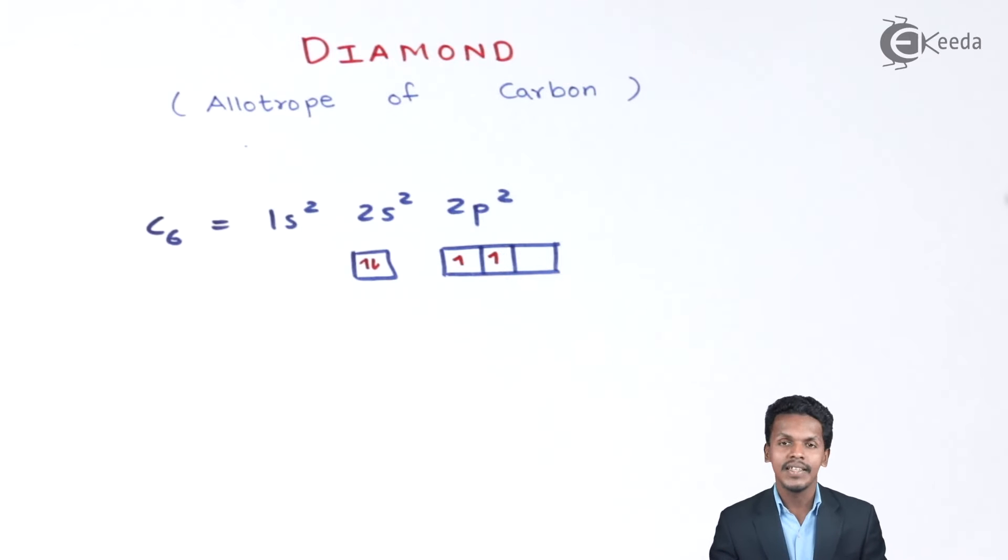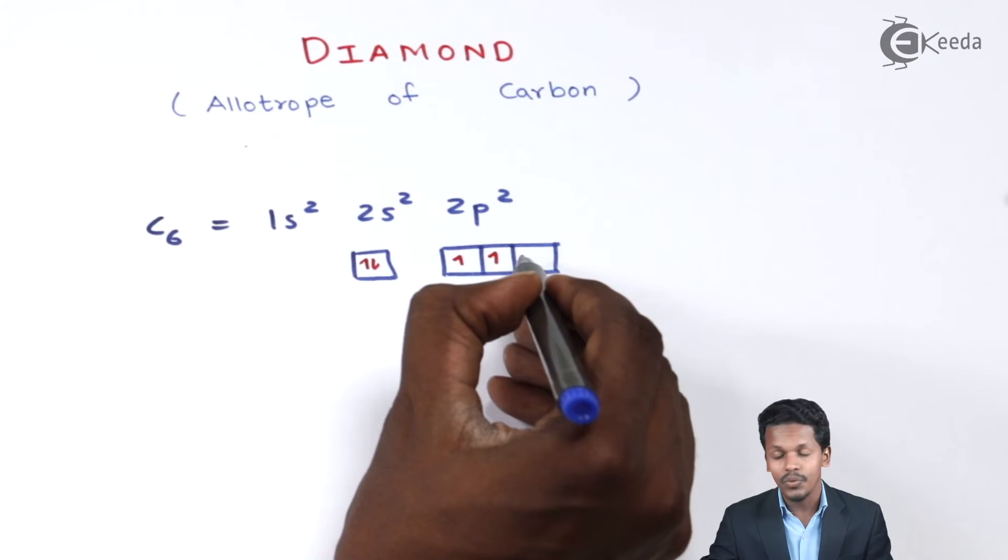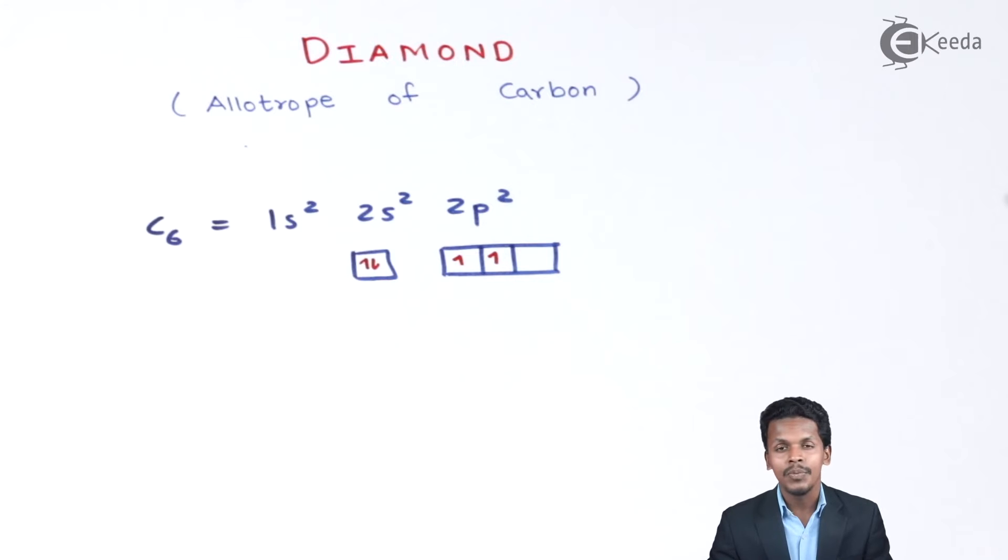While forming a bond with other carbon atoms, and since carbon has a valency of 4, one electron will shift from s and move to the pz orbital, making it have 4 unpaired electrons. These 4 unpaired electrons are satisfied by 4 carbon atoms. This is how carbon forms bonds with other carbon atoms.